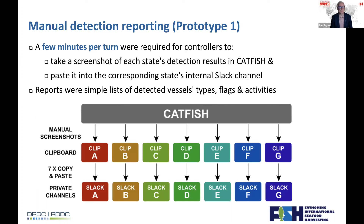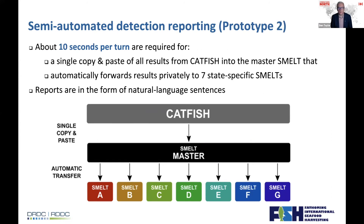Information then comes back to the players. In Prototype 1, Catfish produced a table of who had seen what, but we then had to take screenshots, cut clips of information, and paste them into Slack for seven different players — a time-consuming and messy process. In Prototype 2, the process is the reverse: Catfish instantly evaluates everything, creates a table which is dropped back into Smelt, and automatically updates each player's detection reporting sheet. They receive their information completely unambiguous and error-free, in a matter of seconds.